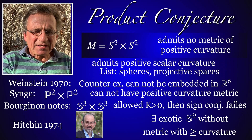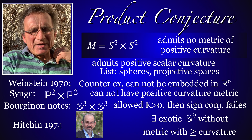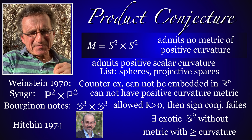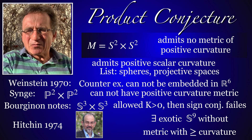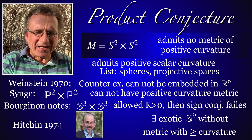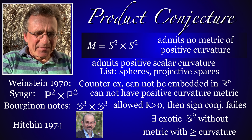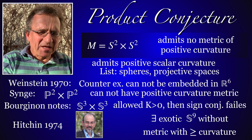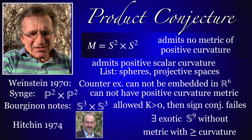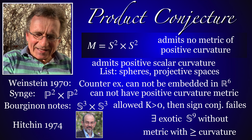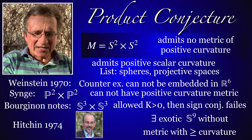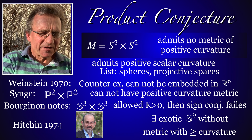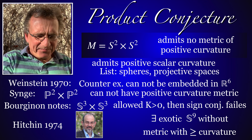Not so much is known about the product conjecture. Weinstein showed that S² × S² cannot be embedded in four dimensions. In four dimensions one only knows that spheres and projective spaces have positive curvature. Spaces like the product of the projective plane with itself cannot have positive curvature by Synge's theorem. But there is also encouragement: there are exotic 9-spheres without non-negative curvature, found by Hitchin.